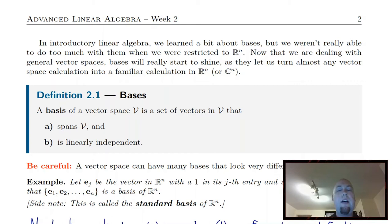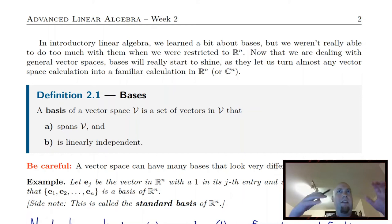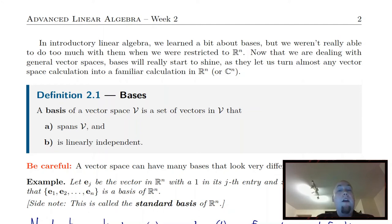It's going to become a lot more important in this more general setting, because what bases are going to let us do is give us a way of specifying coordinates in vector spaces, so that we can say things like, "this vector is three units over in this direction and two units over in that direction," even though there's not necessarily a usual geometric picture for that vector space. So we can do this with polynomials, functions, matrices, and things like this as well. Basically, it's going to let us turn arbitrary vector spaces into things that look more like Rn, which is nice because we're comfortable with Rn and can do lots of calculations there.